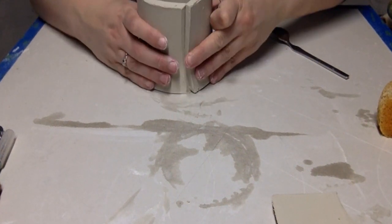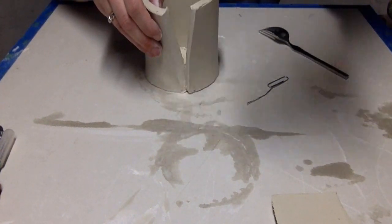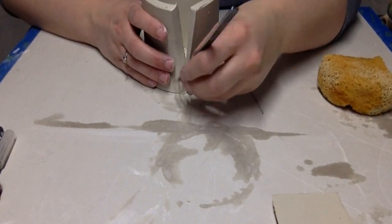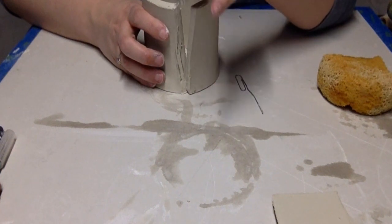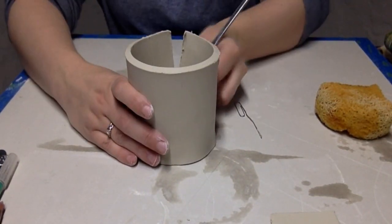Then I'm going to slip and score these edges together, making sure to add lots of water with my damp sponge and use my fork to score all of these edges. Score both sides and then squeeze the clay together.